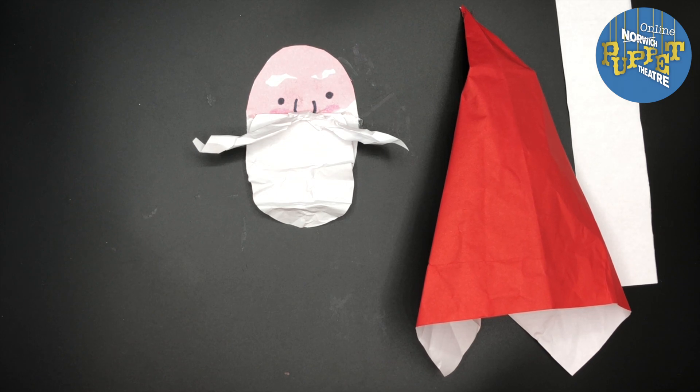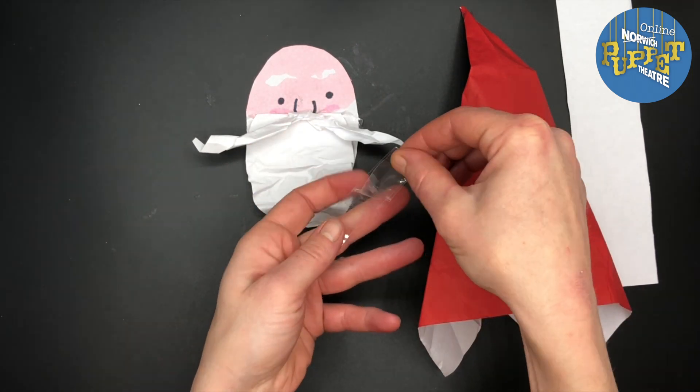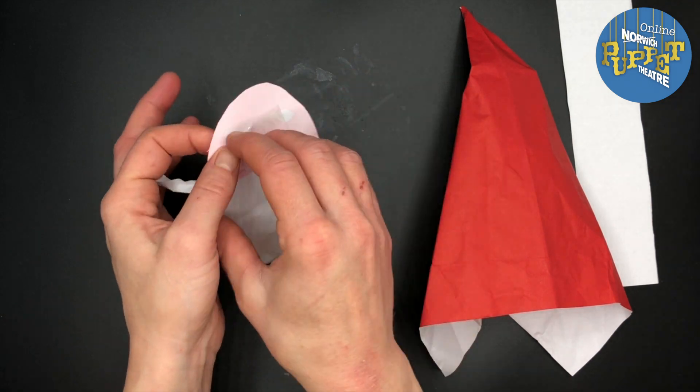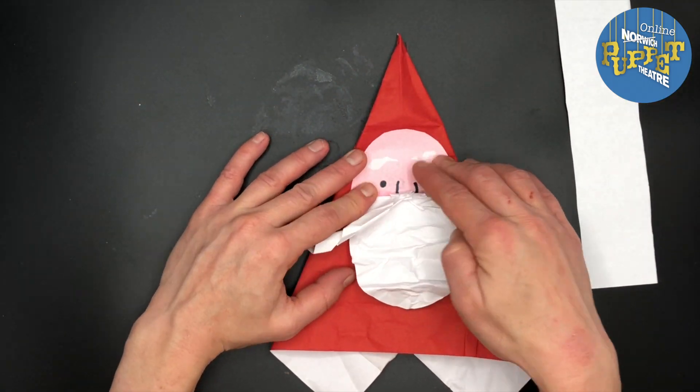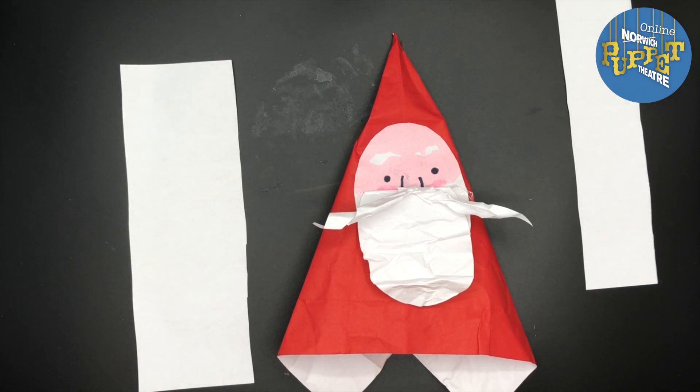Now stick Santa's face onto the body that we made earlier. You can use tape or glue. I'm using sellotape folded back on itself to make it sticky on both sides.